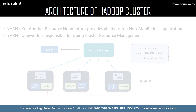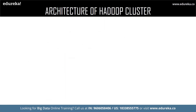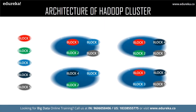Now let us have a look at the overview of Hadoop cluster architecture, followed by the rack awareness algorithm. The architecture of a Hadoop cluster consists of racks; each rack contains a set of computers. One rack contains the master, and these racks use core switches to communicate with each other. Now let us move on to the rack awareness algorithm.